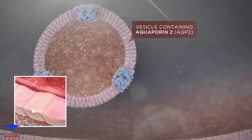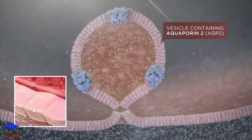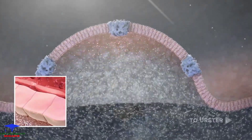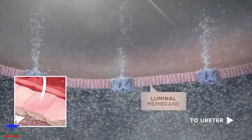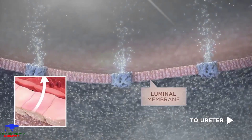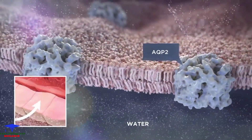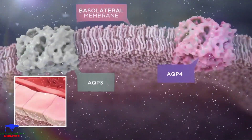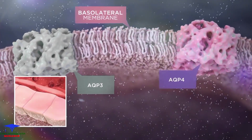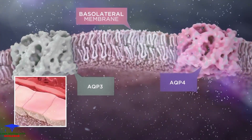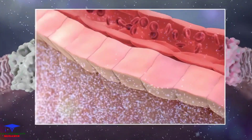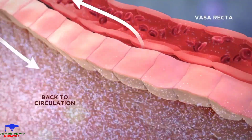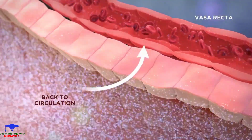PKA triggers the vesicles that contain aquaporin 2 channels, AQP2s, to fuse with the luminal plasma membrane of the collecting tubule, thereby allowing water to enter the cell. Passive resorption of water through the basolateral membrane along osmotic gradients by way of other water channels, AQP3 and AQP4, into the vasa recta ultimately leads to water retention.